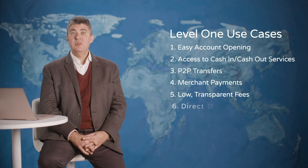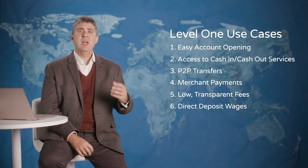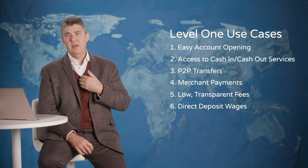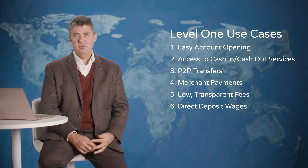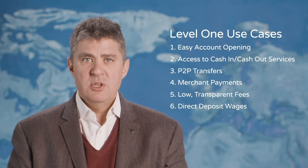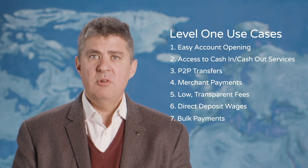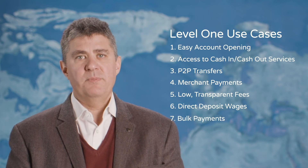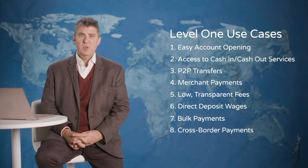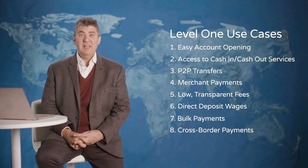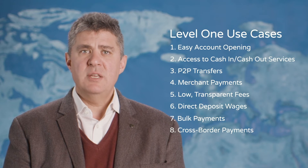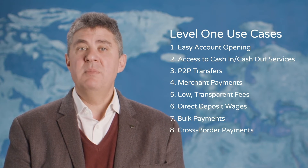I want my employer to pay me directly and easily with whichever DFSP they would like to use, and I don't want to have to move my account to that DFSP in order to receive my wage. I want to use the same account I use for all my other needs, so the system has to support bulk payments across financial service providers. Finally, I want to send money internationally as easily as I do in a single country — for example, if I work in South Africa, I can easily send money home to my family in Botswana. These are the use cases that good interoperability must facilitate.